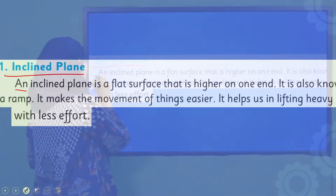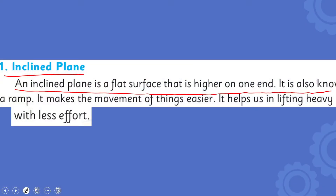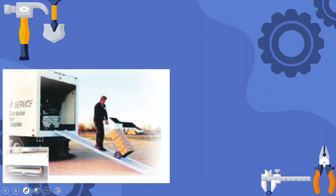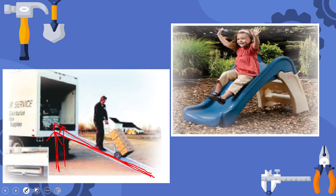Today we are going to discuss a simple machine which is the inclined plane. An inclined plane is a flat surface that is higher on one end. It is also known as a ramp. It makes the movement of things easier and helps us lift heavy loads with less effort. You can see it is a plank — a flat surface that is inclined, raised on one side. Instead of lifting a weight directly upward, you drag it along the plane, and your effort required is much less.